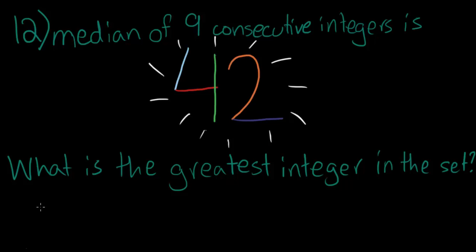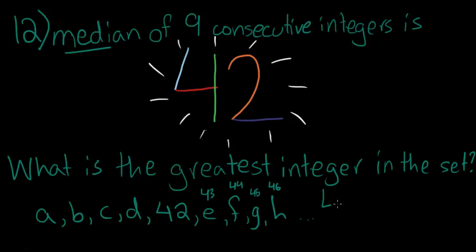So, if we were to use constants for numbers that we don't know, it would be A, B, C, D, and since there's nine numbers total, there will be four on the left side, four on the right side, and the median in the middle because the median is the middle of the group. So, 42, and then E, F, G, H, so on. And, since they are integers, they cannot be fractions or decimals. So, they need to go at units of one because they're consecutive integers. So, 42, 43, 44, 45, 46. 46 is the greatest integer in the set, and that's the correct answer.